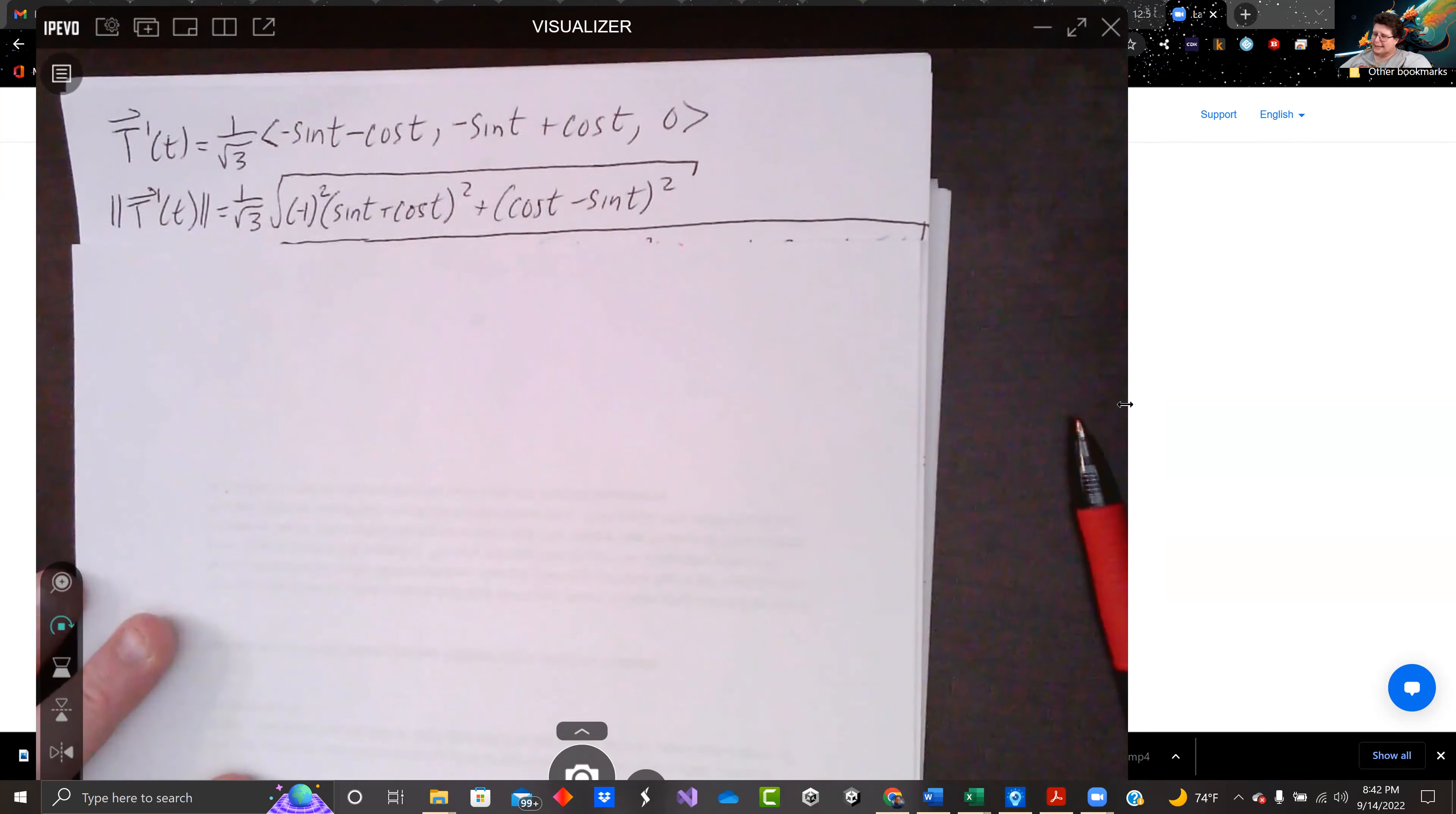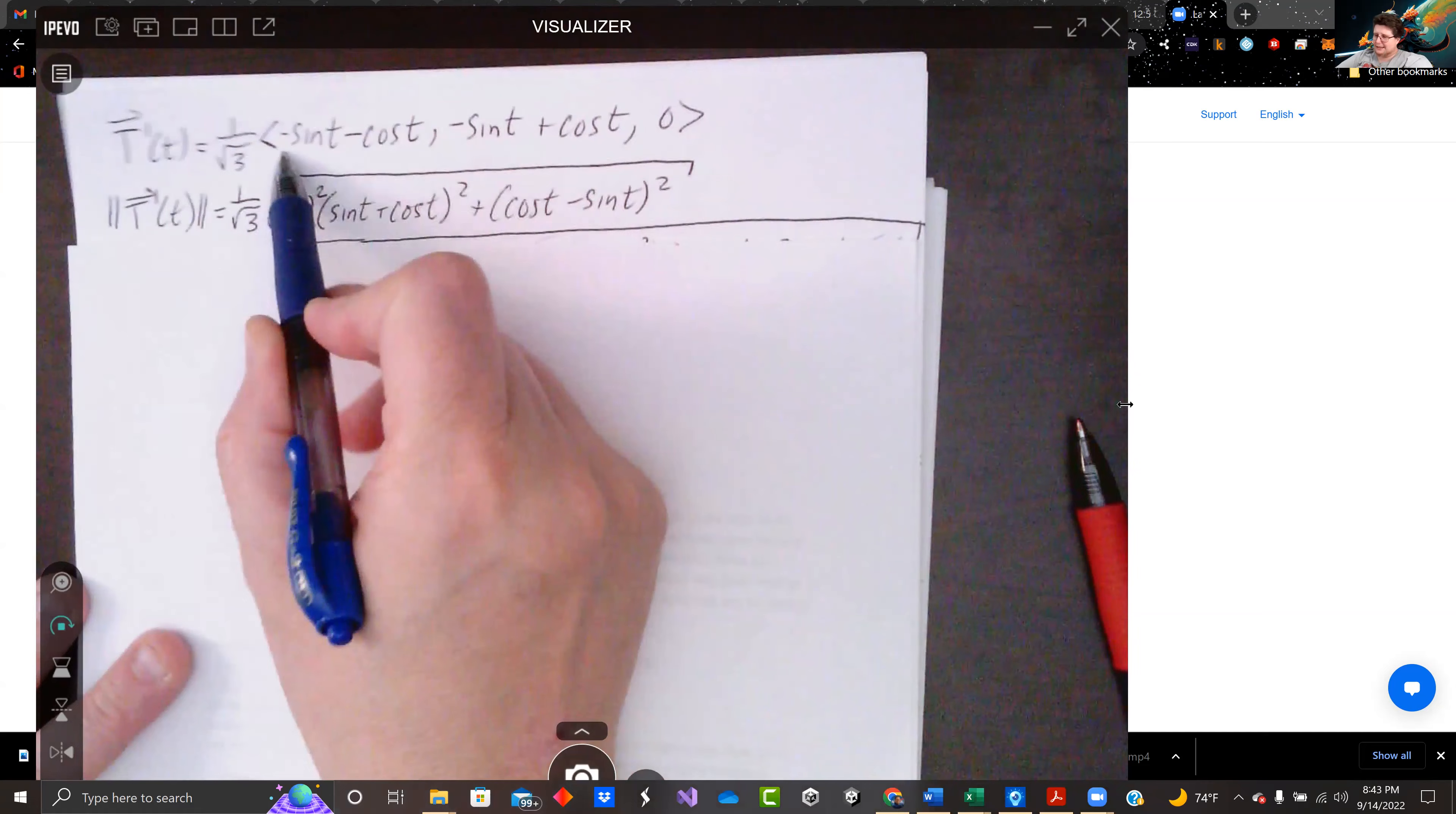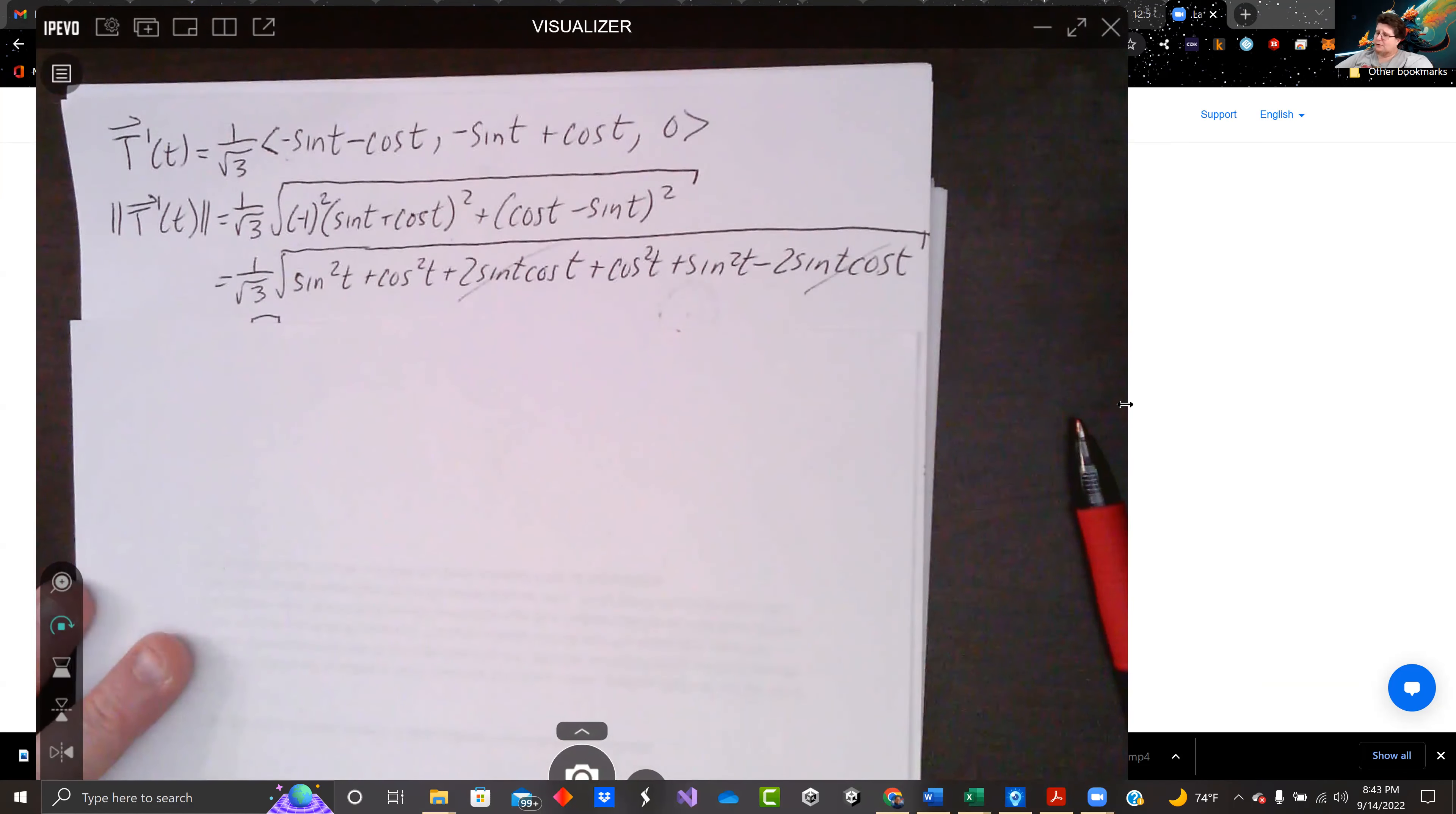So again, we have sine t plus cosine t squared and cosine minus sine squared. I factored out the negative one so I could write this like this. But negative one squared is positive one. It's just going to go away. It's like magic. Again, we multiply all that crap out.